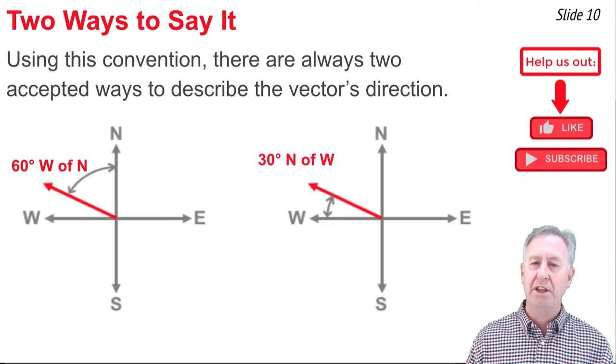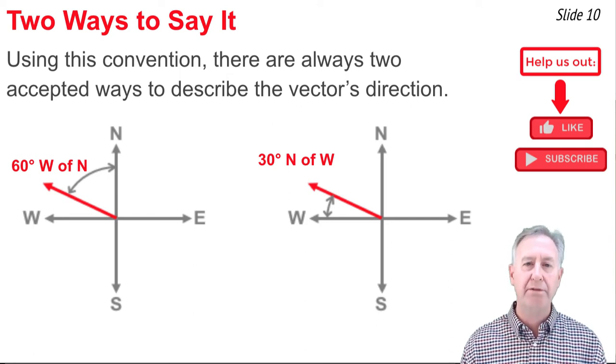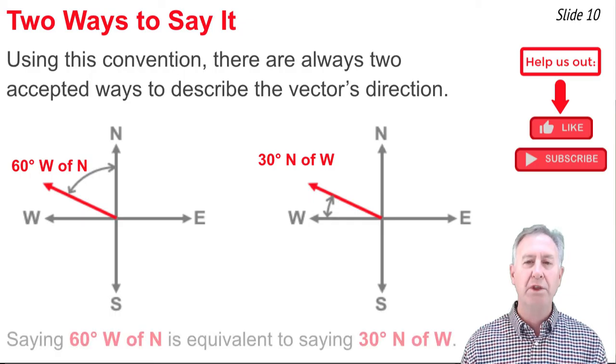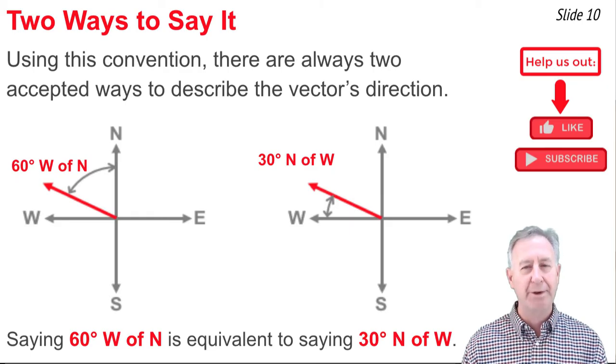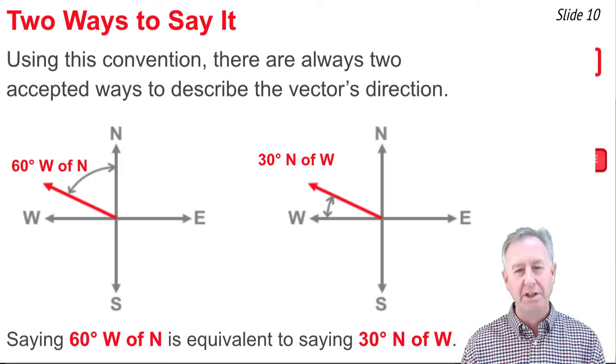And on the right side, we see that it's the same vector in the same direction, but we would describe it differently as being 30 degrees north of west. Both these ways of expressing the direction of this vector are equivalent to one another. So as you see, there are always two ways of expressing the direction of a vector using this convention.